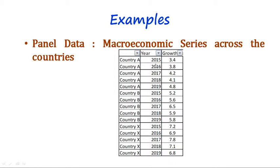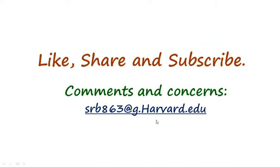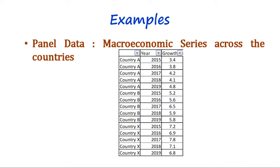As an example of panel data, this table shows the data of different countries over the period 2015 to 2019. The first five rows show the data of country A from 2015 to 2019, then from row 6 onward the data continues. This includes both time series data as well as cross-section data, so this is an example of panel data.